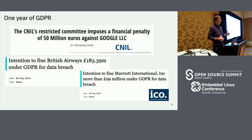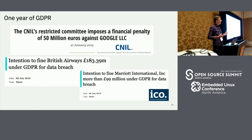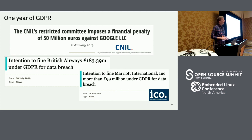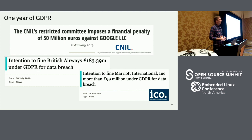The general opinion is that regulatory bodies are still warming up, so bigger fines are still going to show up. For example, the ICO from the United Kingdom stated their intention to fine British Airways for around 180 million pounds and Marriott International with a fine of around 99 million pounds. So there are some serious fines, and we've got to keep track of what's going to happen with those companies.